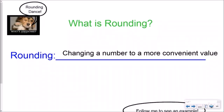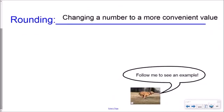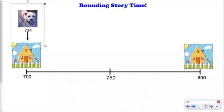So to see an example, let's follow the dog and click on it. This is rounding story time, and this is to kind of conceptually understand what we're doing. This is a number line—we've got 700, in the middle 750, and then we have 800.